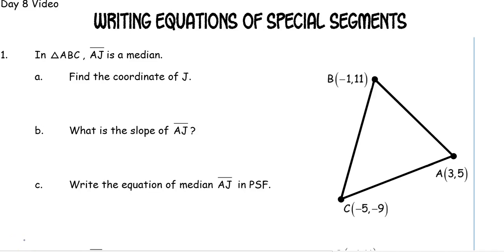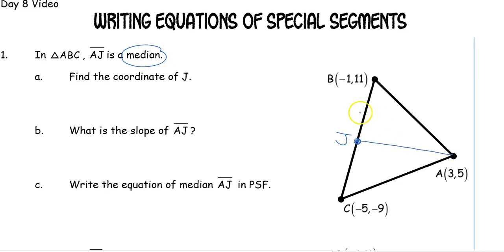In today's video we're going to be writing equations of special segments. In our first one, we are given triangle ABC and we're told that segment AJ is a median. Going from A to J, since it's a median, J is going to be on the opposite side and J is going to be the midpoint of segment BC, which will be really important as we try to find our special pieces.